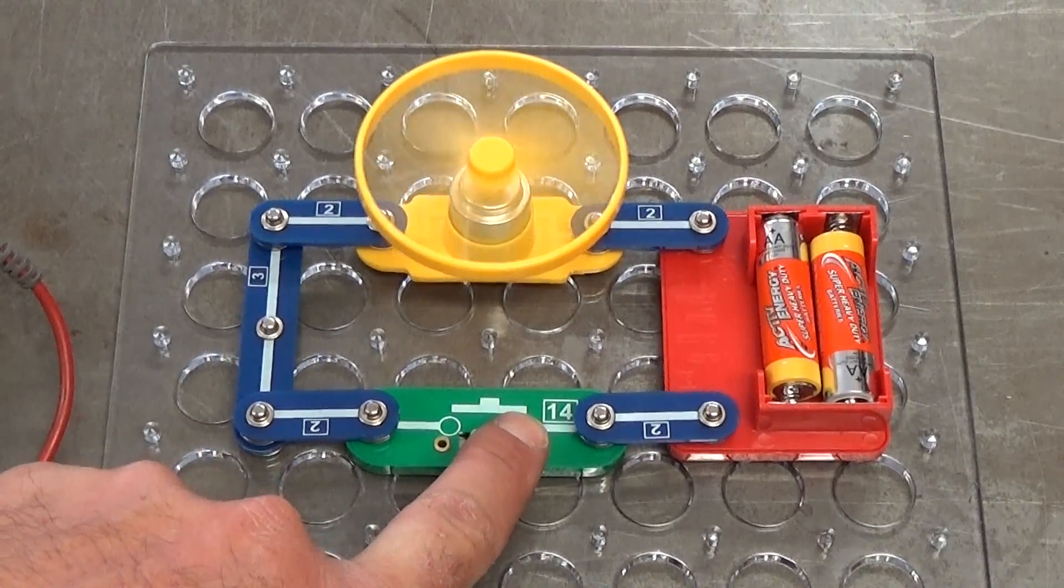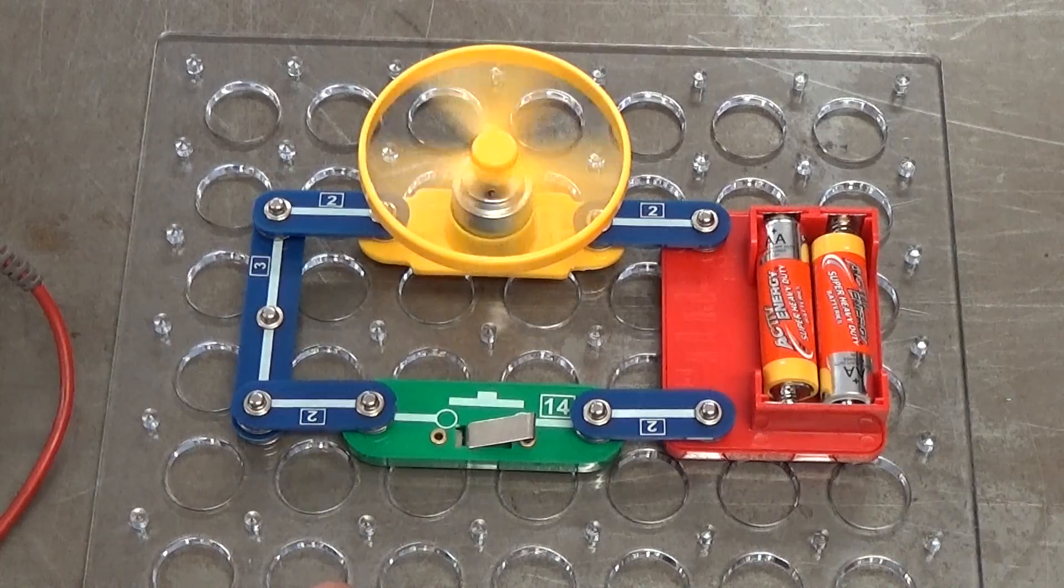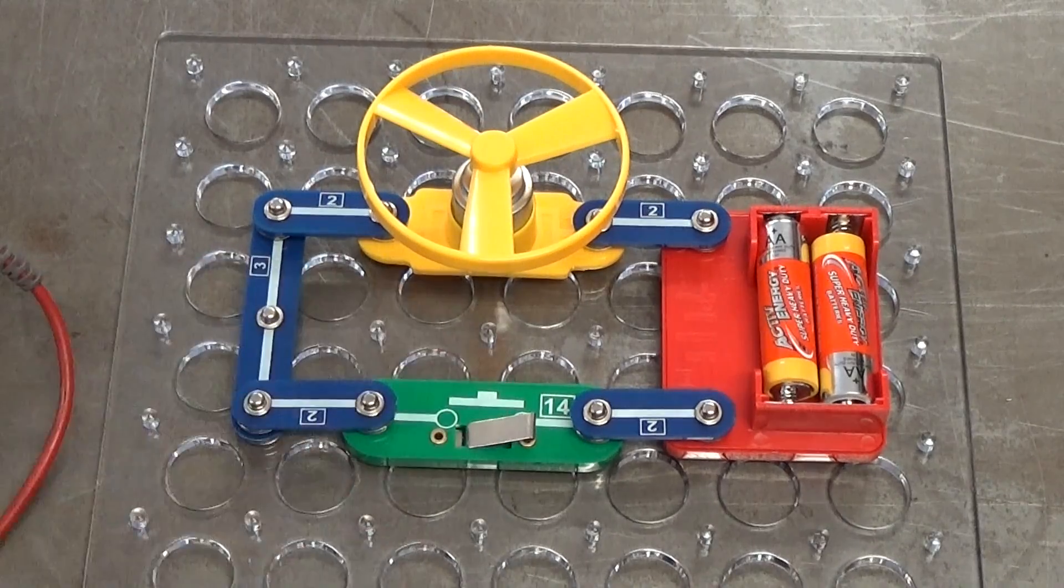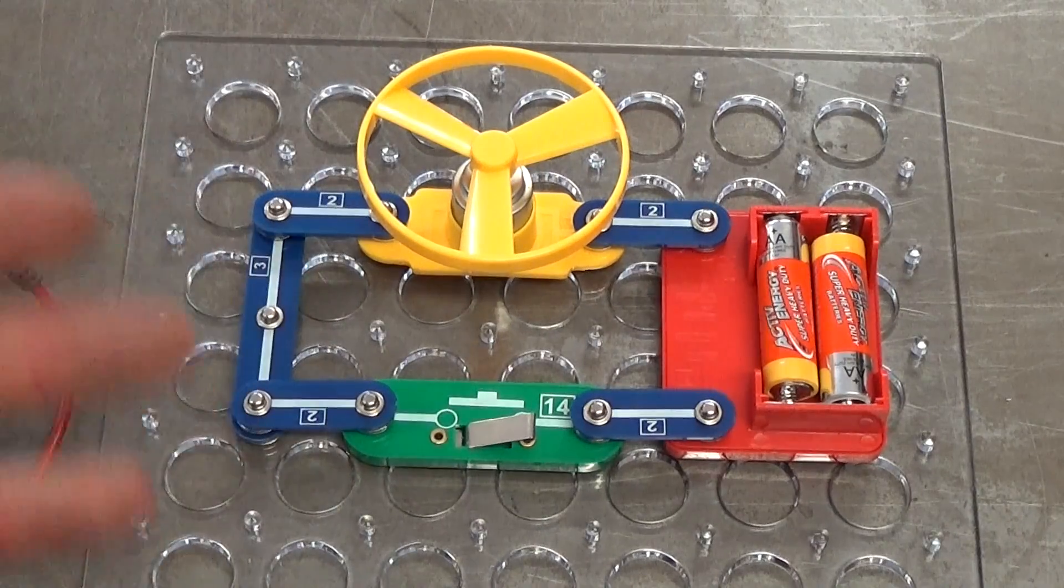Okay, starter motor on, starter motor off. No difference to what happens in your bike. And again, we can use the same techniques to test the voltage at different points and make sure the circuit's closed. That's a good way to test the wiring.